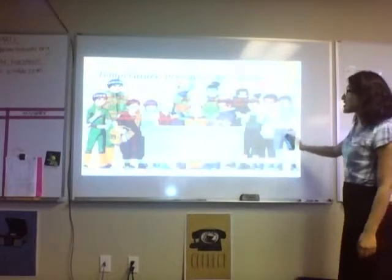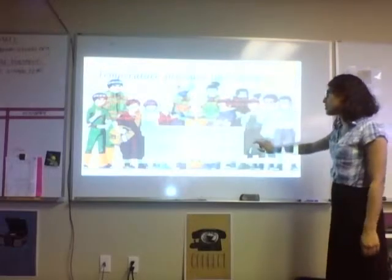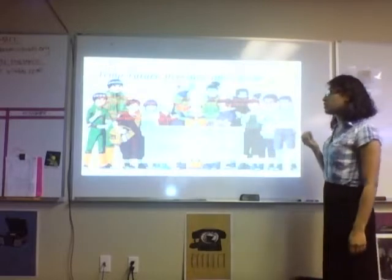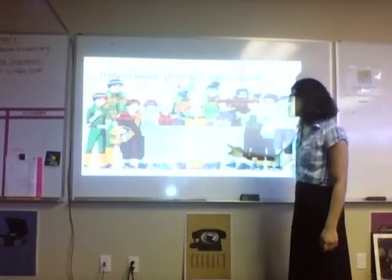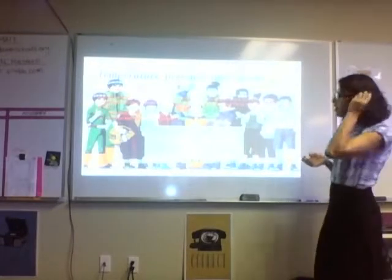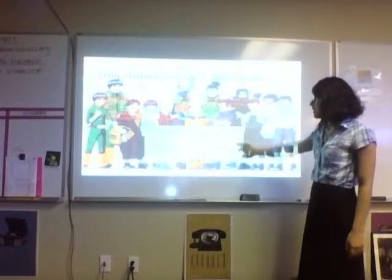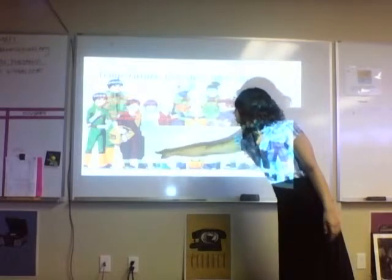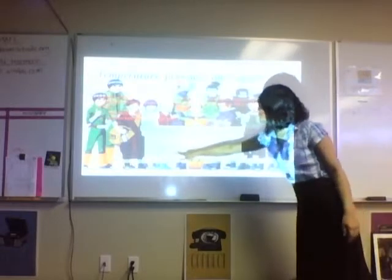Temperature, pressure, and volume — I received a perfect A, which is my best one. For this, you have to add Celsius with 273 to get Kelvin, and also subtract Kelvin with 273 to get Celsius. As you see right here in my class notes, it says 7 Celsius — I had to add 273 to get 280 Kelvin.